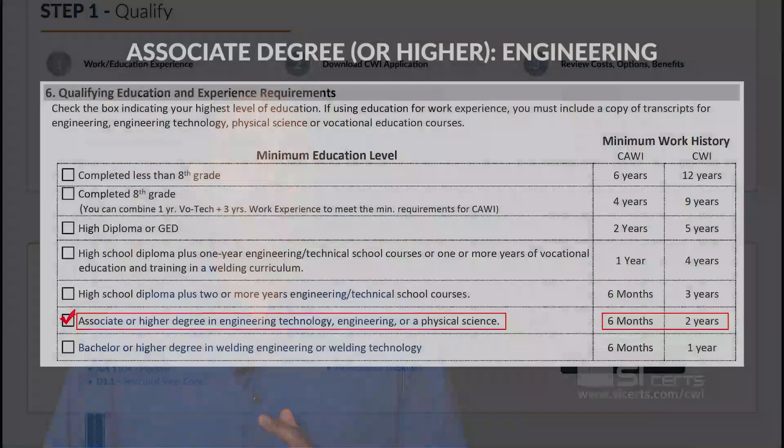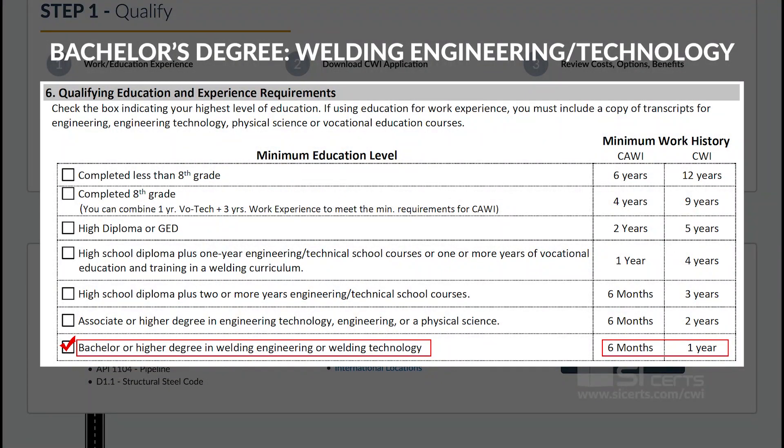Some of our students have welding-related degrees or are civil or structural engineers. According to AWS requirements, they would only need two years of work history. A specific welding, engineering, or technology bachelor's degree requires the least amount of work experience, only one year.